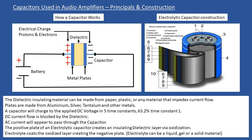A DC blocking capacitor is common in practice. For example, an audio signal tracer — even a simple set of headphones — can have a capacitor in series with the positive probe, with the negative connected to chassis ground. As you track the audio signal through the circuit, the blocking capacitor stops any DC from reaching the headphones and causing damage.